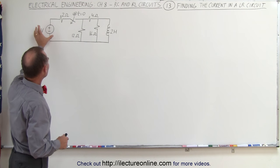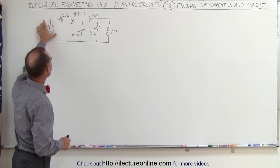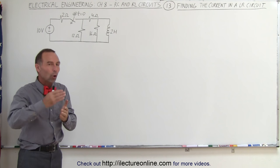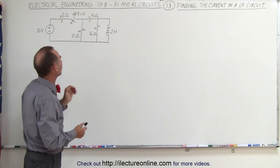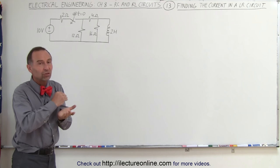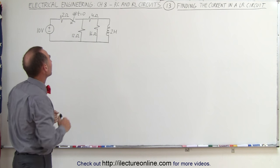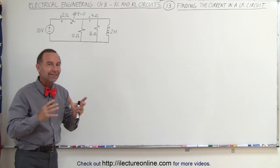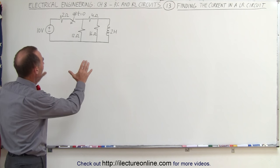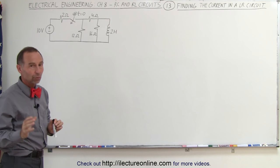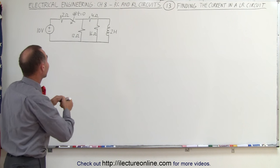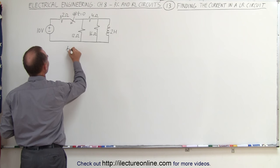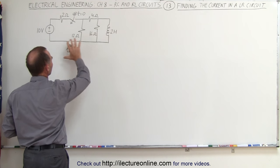First of all, what we have here is a 10 volt source connected to a 2 ohm resistor and a switch. The switch will open at time equals zero, which means that the switch is closed before that moment in time. What we need to do is look at the steady state situation of this circuit when the switch is closed — in other words, when time is less than zero. So at the moment that time is less than zero, what does that circuit look like?